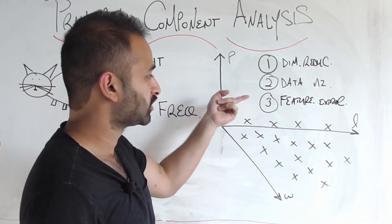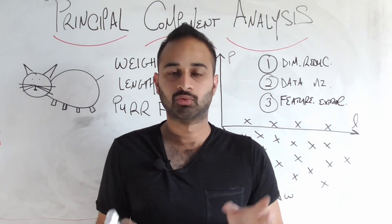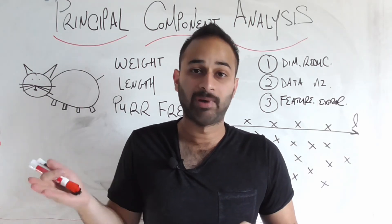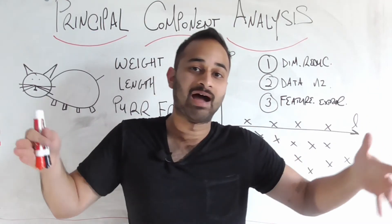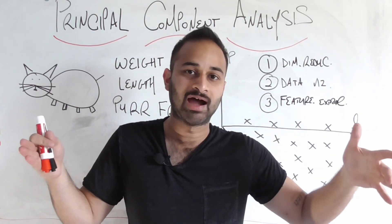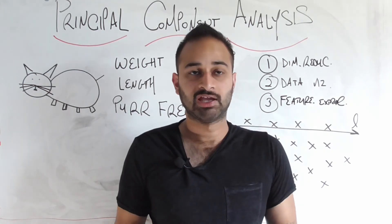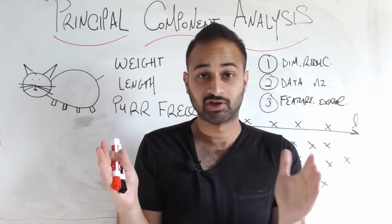So this is where principal component analysis comes in, it helps us identify those cases where a certain variable or a collection of variables are not really independent. They are just kind of combinations of variables that we already have, linear combinations of variables that we already have. Therefore, we are safe to just get rid of those. So that's another case where it helps us to shrink the dimensionality of our data without really losing any information.